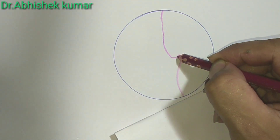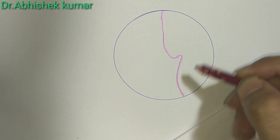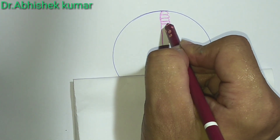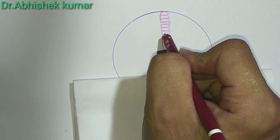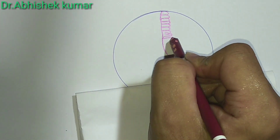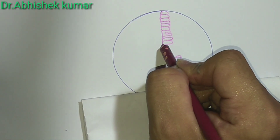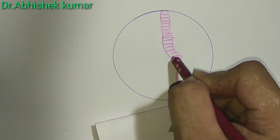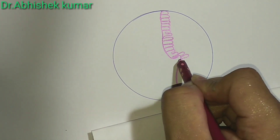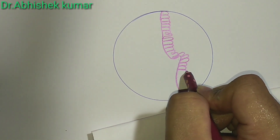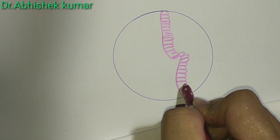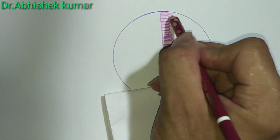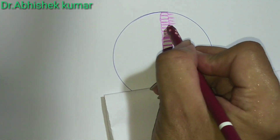Here we are making the basement membrane of the trachea. Trachea is a fibroelastic cartilaginous tube, and here we are making the goblet cells along with pseudo-stratified ciliated columnar epithelium. It extends from the lower border of trachea at C6 to the level of bifurcation at T4.